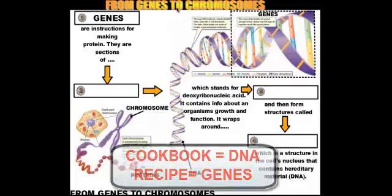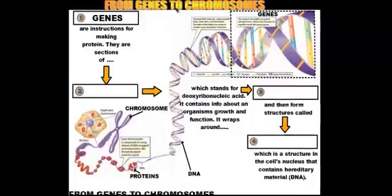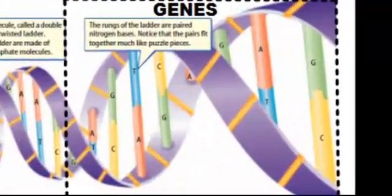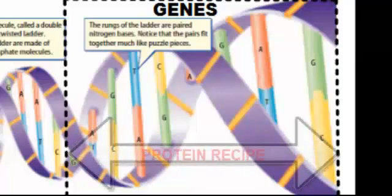The genes are the instructions for making the protein. So if you take a look in the upper right-hand corner here, you'll notice that I have a section of DNA boxed off because a gene is a section of DNA. So this particular section would be the recipe for a particular type of protein.